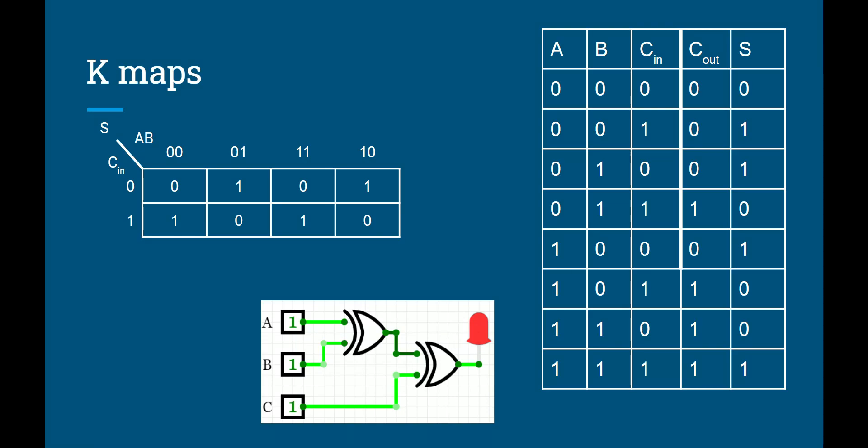And you see that this is A XOR B XOR C. So you could solve that with a 3-input XOR gate. But since we don't have those in Tinkercad, I solved it with two 2-input XOR gates.